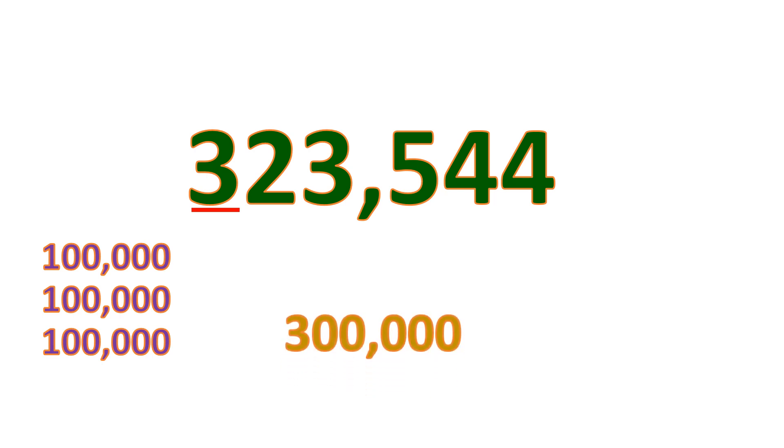So let's go back to this number and focus on the hundred thousands place with the digit three. This digit tells you that there are three one hundred thousands. Getting the sum of these three one hundred thousands means you will get three hundred thousand, and this three hundred thousand is the value of digit three in the hundred thousands place — we call this the value of a digit.